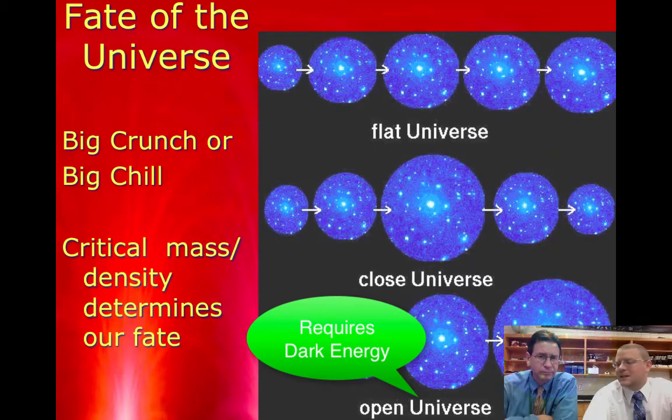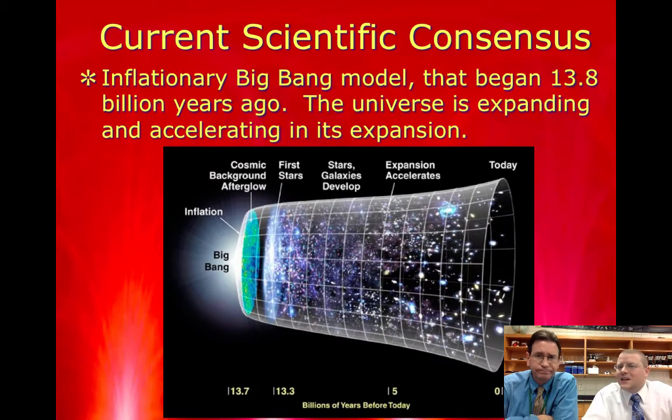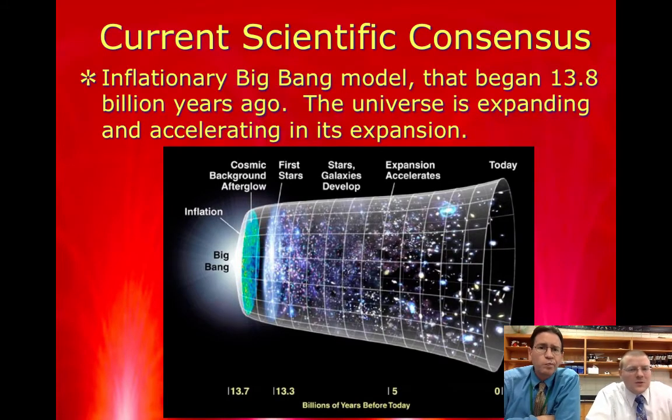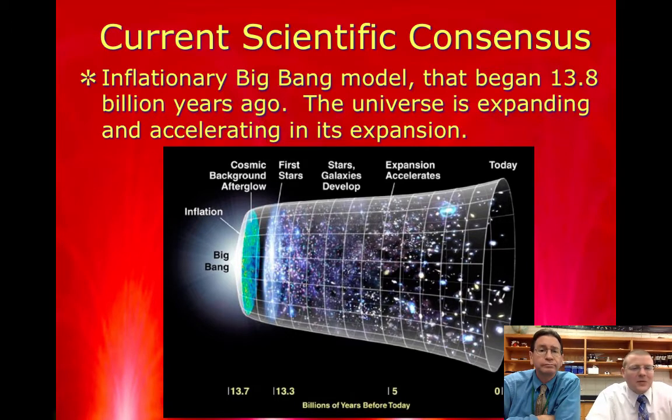Which brings us to our current scientific consensus of how the universe began and where it is going. It's known as the inflationary Big Bang model. Yes, there was a Big Bang that happened around 13.8 billion years ago. But that expansion happened super rapidly.